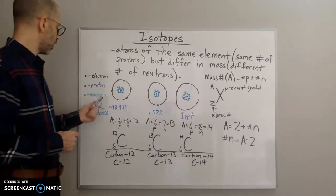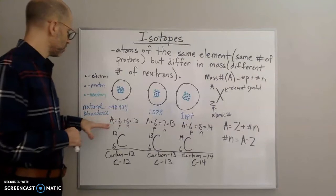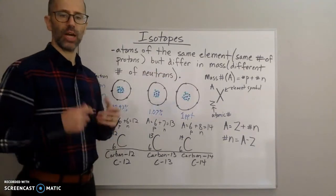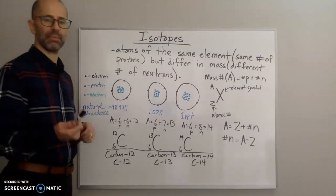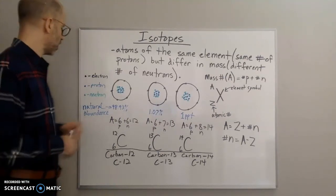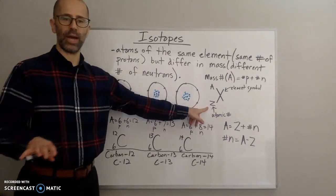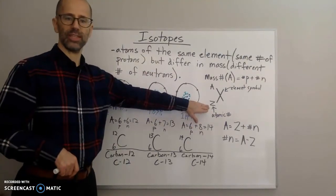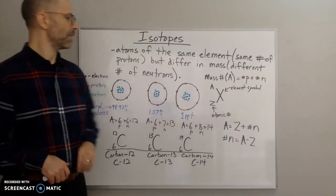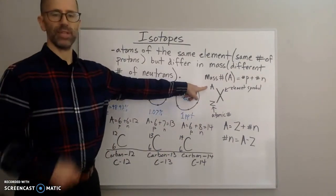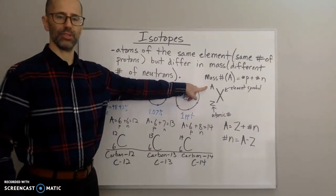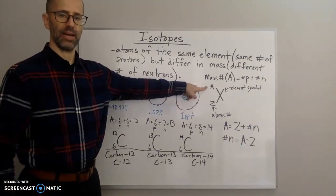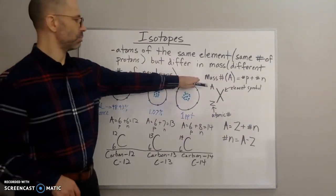We represent these isotopes with symbols. There are two numbers to know: the atomic number, represented by the letter Z, is the number of protons. The mass number, represented by the letter A — don't confuse that with atomic number — represents the mass number.